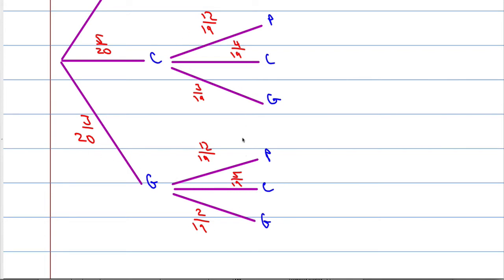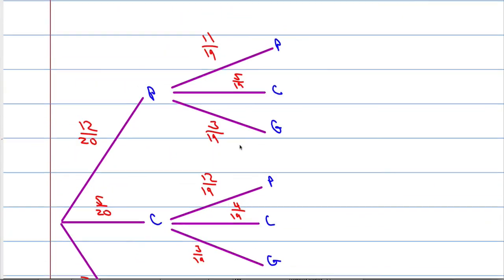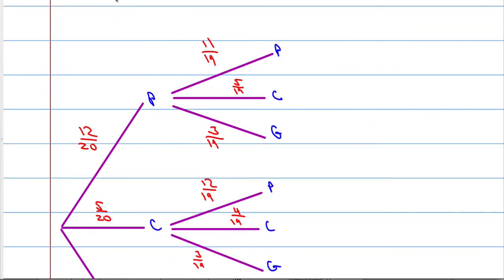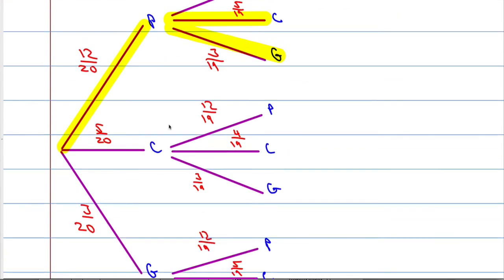So once you draw your tree diagram, what we want to do is work out all the different ways we could have 2 biscuits that are not the same type. If I get plain the first time, I'm going to need to get ginger or chocolate the second. If I get chocolate the first time, I'm going to need to get plain or ginger on the second.